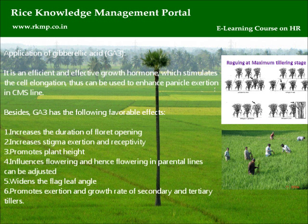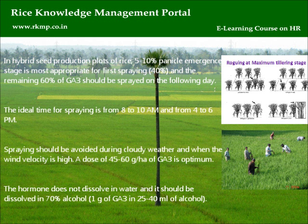Application of gibberellic acid (GA3): GA3 adjusts panicle lines, widens the flag leaf angle, and promotes exertion and growth rate of secondary and tertiary tillers. In hybrid seed production plots of rice, the 5–10% panicle emergent stage is most appropriate for the first spraying of 40%, and the remaining 60% of GA3 should be sprayed on the following day. The ideal time for spraying is from 8–10 a.m. and from 4–6 p.m. Spraying should be avoided during cloudy weather and when wind velocity is high. A dose of 45–60 grams per hectare of GA3 is optimum. Since the hormone does not dissolve in water, it should be dissolved in 70% alcohol — 1 gram of GA3 in 25–40 milliliters of alcohol.